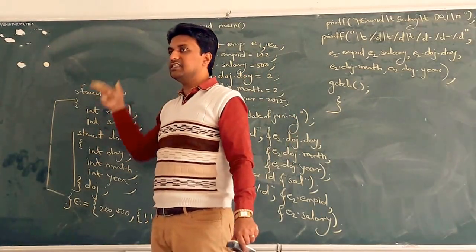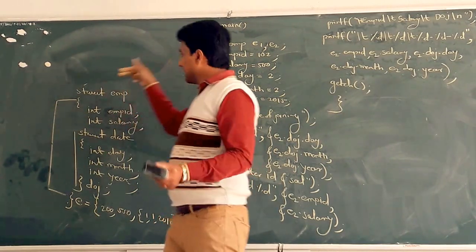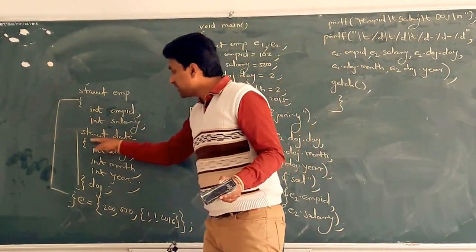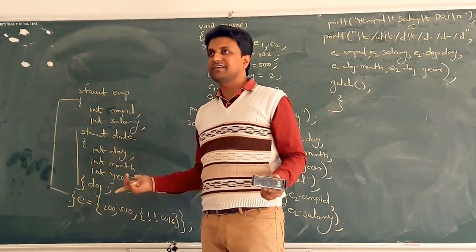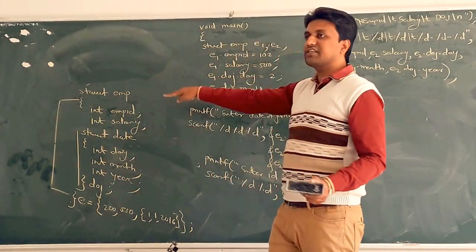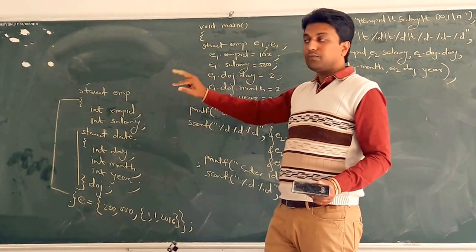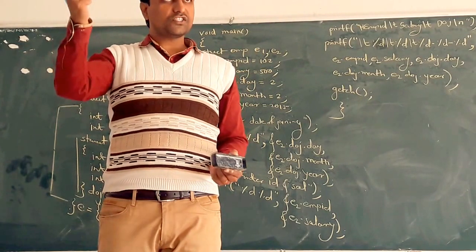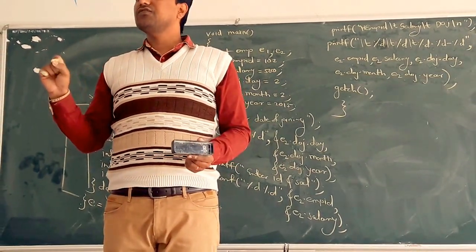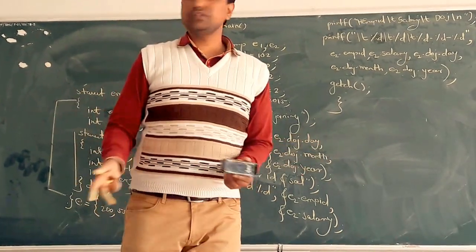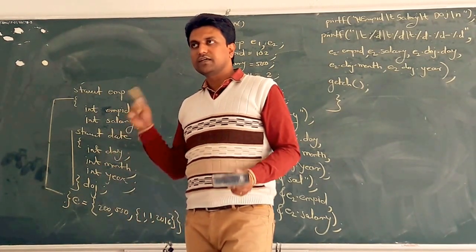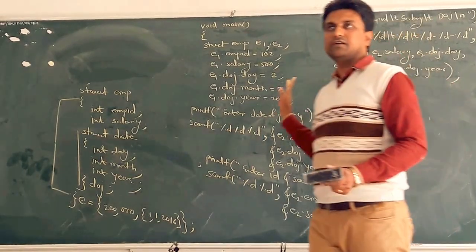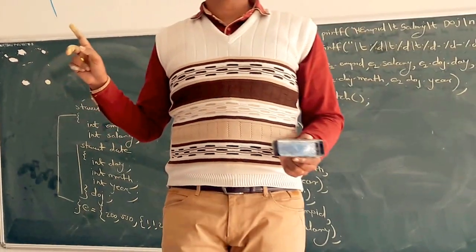If you use the first type of nested structuring, you can create objects of DOJ anywhere in main. But if you want struct date to be private to struct employee, use the embedded approach. Both are important. As per the requirement, we can use two different structures or embed one within another. The main points are: how to initialize statically or dynamically, and how to access the nested structure members. That is the last point in the structure chapter. Thank you.